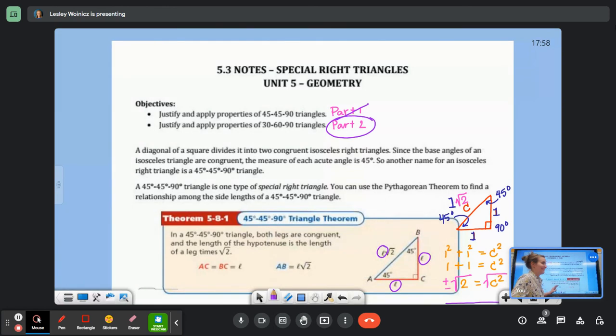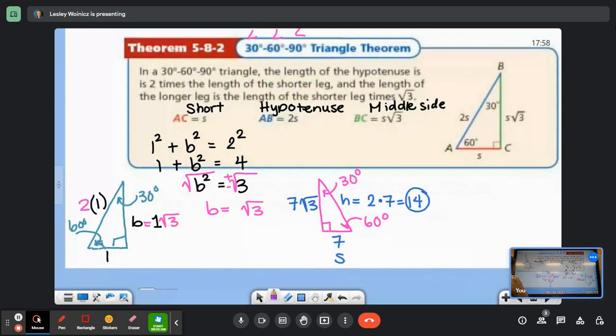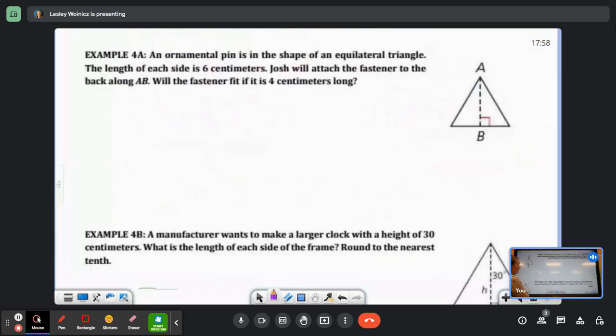Alright guys, I definitely forgot to do the word problems at the end of the part 2 video. So this is the part 3 video. We already did part 2. This time we're doing part 3 with the word problems at the end of the 30-60-90 triangles. So we're going all the way to the end on example 4A and B.